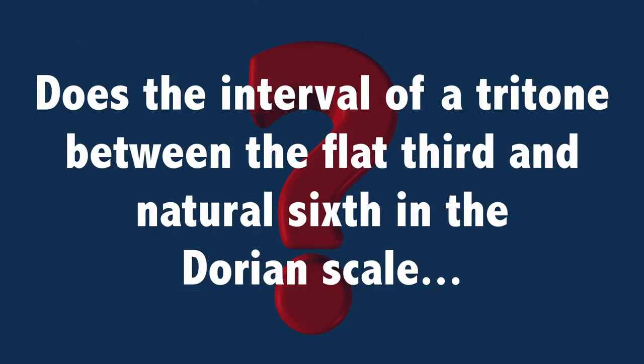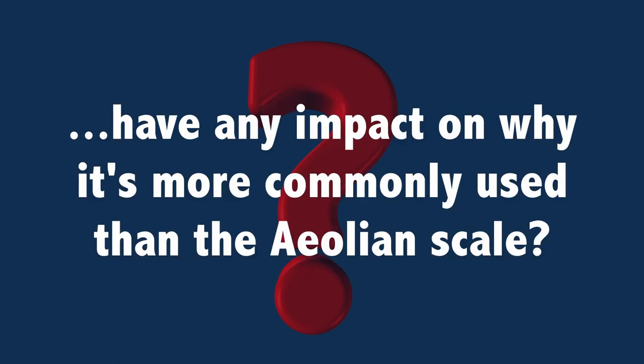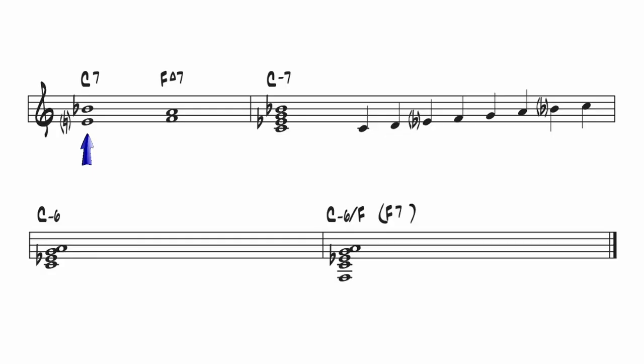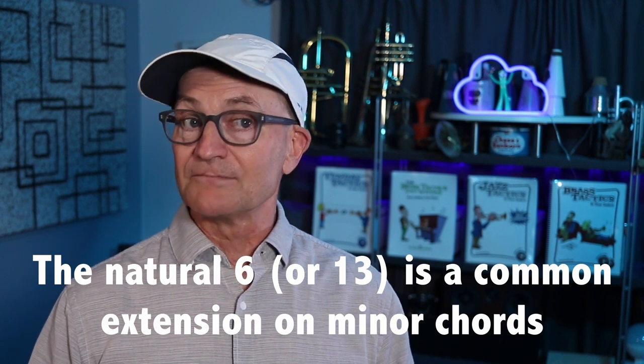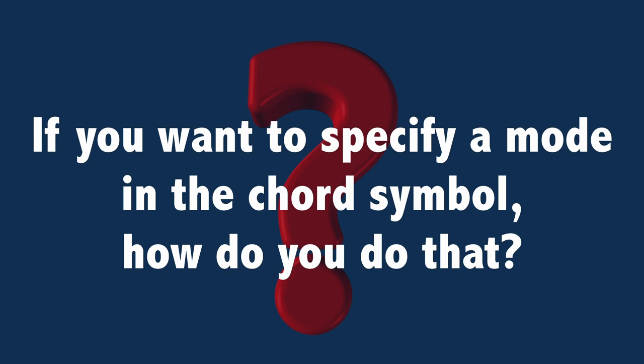Does the interval of a tritone between the flat 3rd and the natural 6th in a Dorian scale have any impact on why it's more commonly used than the Aeolian scale? The tritone interval in a dominant 7th chord between the major 3rd and the flat 7 is significant because it creates an instability that makes that chord want to resolve. The tritone between the 3rd and the 6th doesn't exist in a minor 7 chord, though it does exist in the scale. As to why Dorian scales are used more often than Aeolian scales, I'd say that's because 2 chords appear more frequently than 6 chords. One thought is that the natural 6 is used as an extension on minor chords much more often than the flat 6 would be.